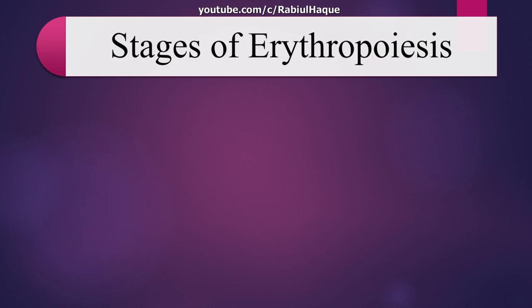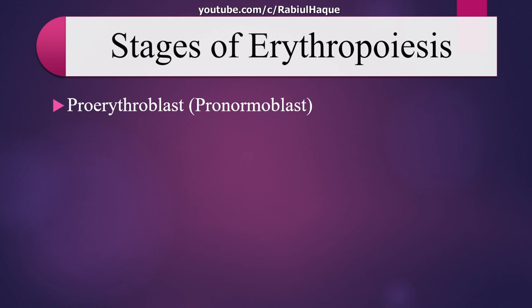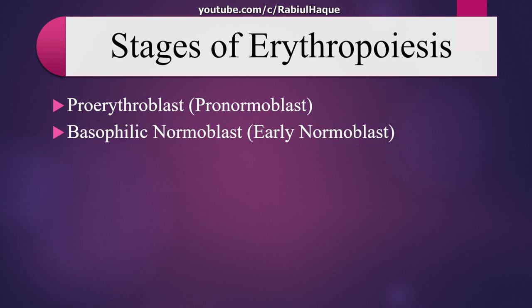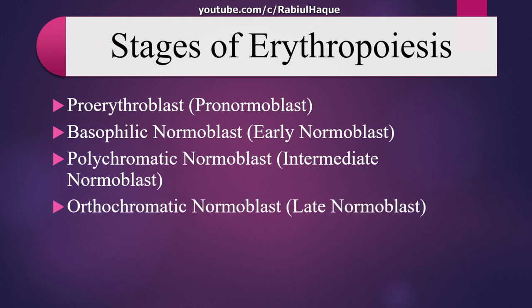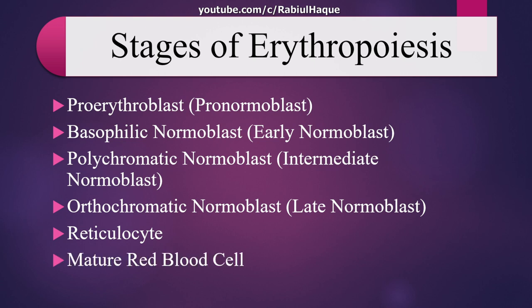In this slide, we can see the various stages of erythropoiesis. Always remember: erythroid cells are arranged in the form of islands in the bone marrow. The stages of erythropoiesis are: pro-erythroblast (also known as pronormoblast), then basophilic normoblast (also known as early normoblast), then polychromatic normoblast (also known as intermediate normoblast), then orthochromatic normoblast (also known as late normoblast), and ultimately reticulocyte, from which mature red blood cells are formed.